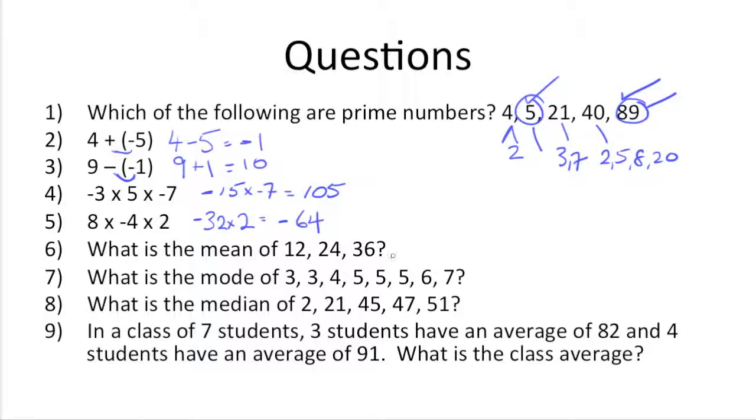On to number six, what's the mean of twelve, twenty-four, and thirty-six? Now if you remember, mean is just another way of saying average. So what we need to do is add these three numbers up and divide by three. So twelve plus twenty-four gets us thirty-six, and then thirty-six plus thirty-six gets us seventy-two. Seventy-two divided by three is twenty-four.